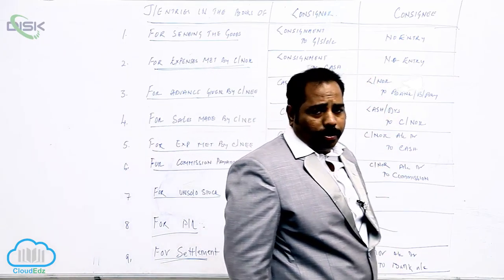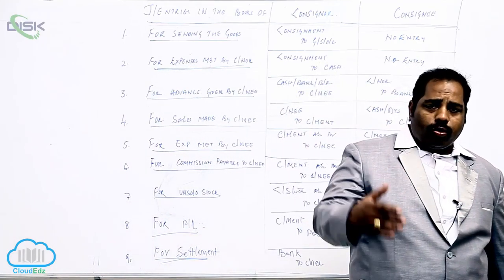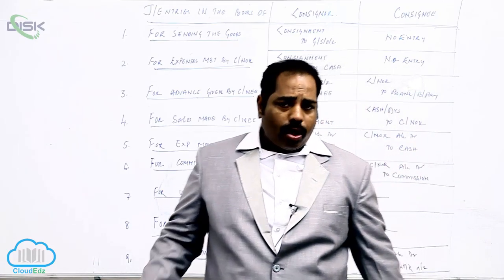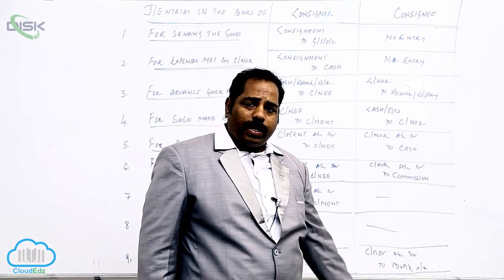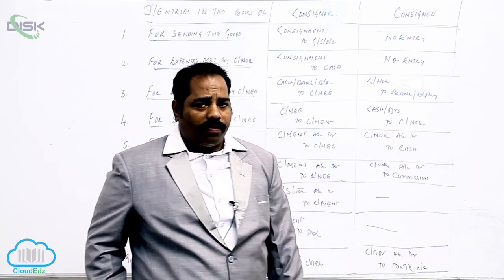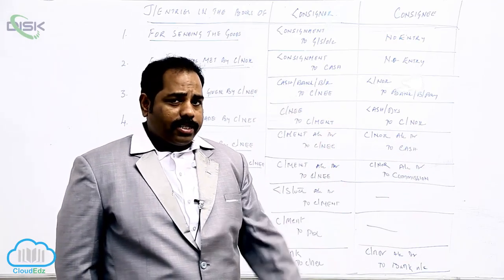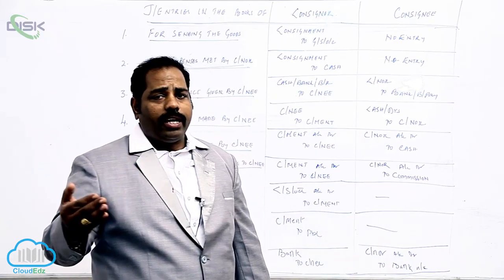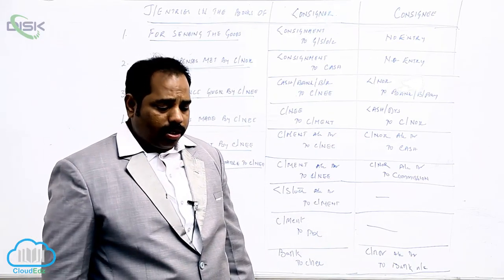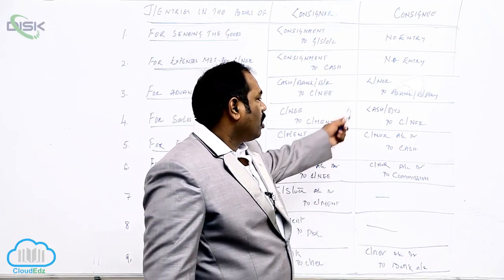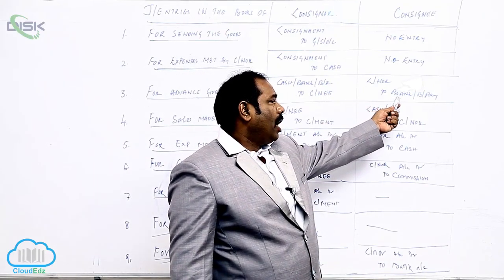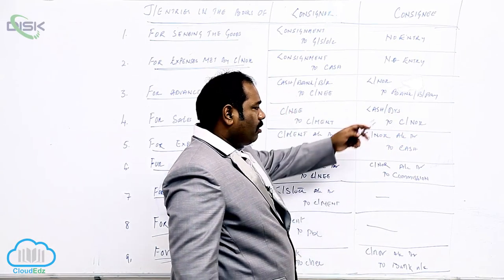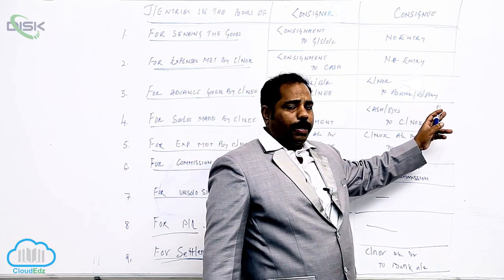So to summarize the entries in the books of consignee: when we send the goods, there is no entry because ownership is not transferred. Second, for expenses made by consigner, there is no entry because it is paid by consigner. Third, advance: when the consignee is paying advance to consigner, consigner is the receiver. We are paying through check — cash or check is going out — and we are giving a bills payable, so bills payable is going out.